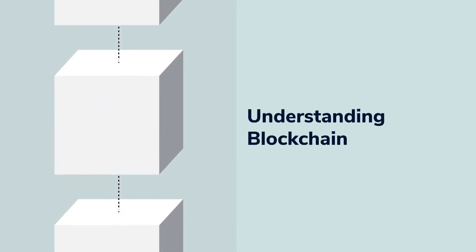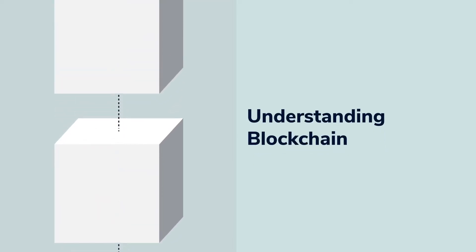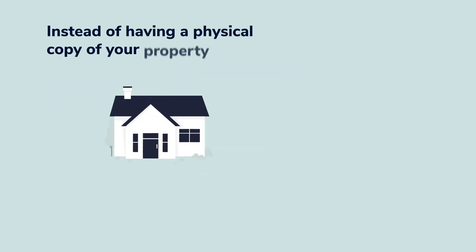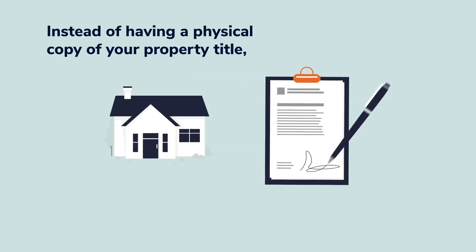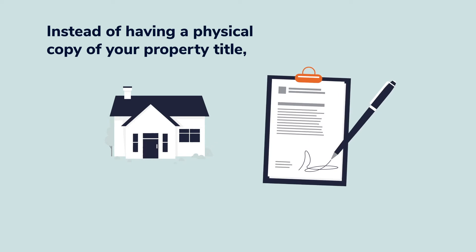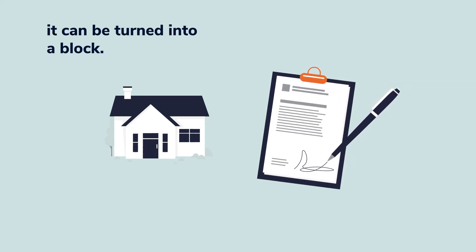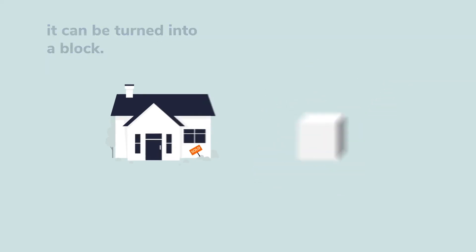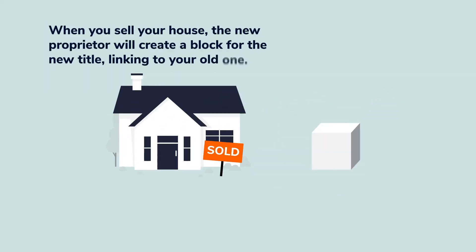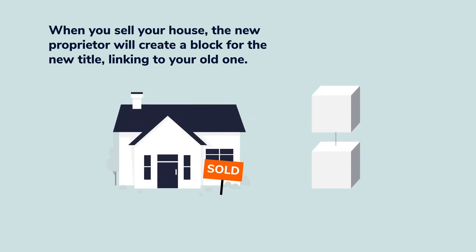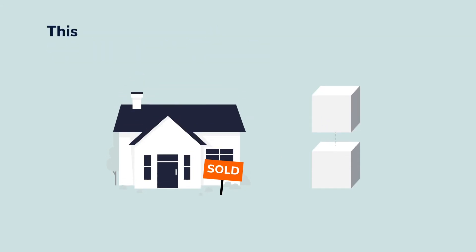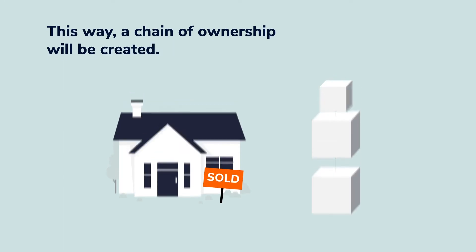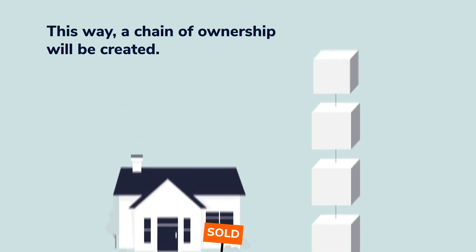Understanding blockchain. Let's say you own a house, and instead of having a physical copy of your property title, it can be turned into a block. When you sell your house, the new proprietor will create a block for the new title linking to your old one. This way, a chain of ownership will be created.